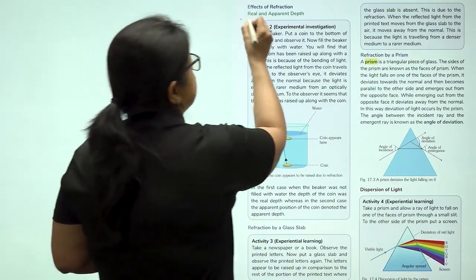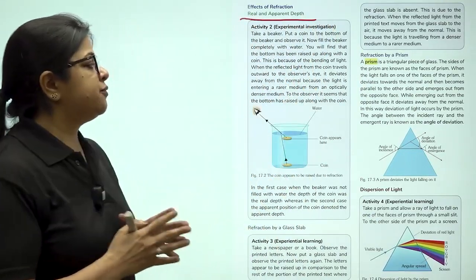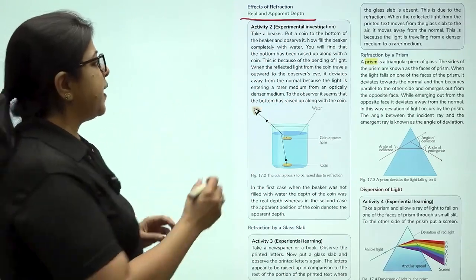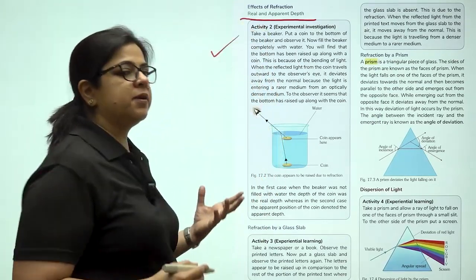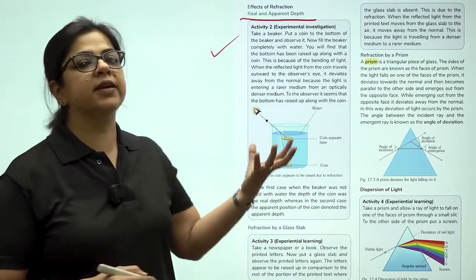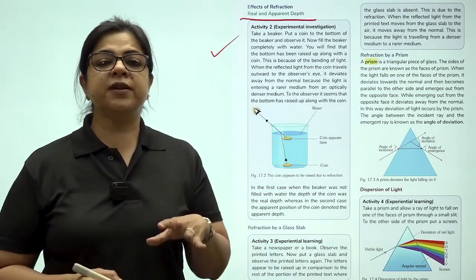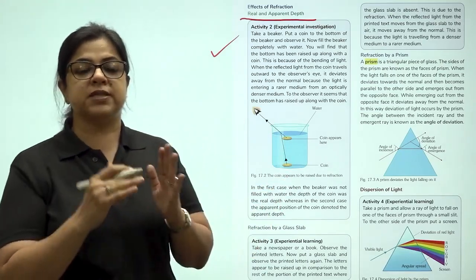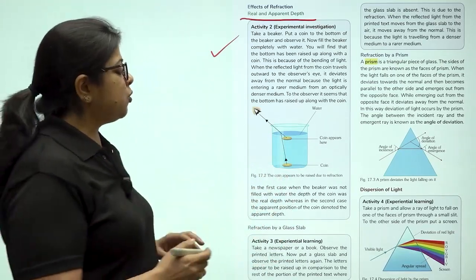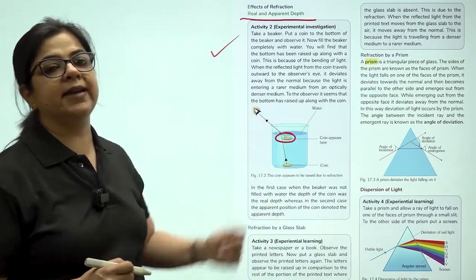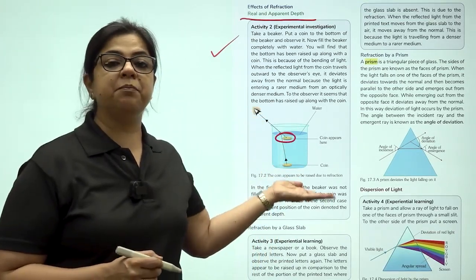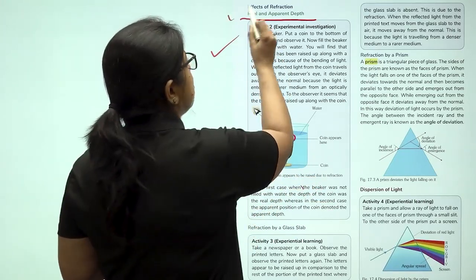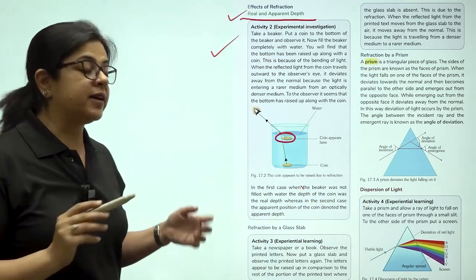The effect of refraction, the first example is real and apparent depth. This is a very interesting experiment that you can do at home also. If you don't have a beaker, you can take a glass container. Fill it with water and put a coin and look exactly from the top, not from the side, right from the top. You will feel as though the coin is slightly above the base of the container. Why is it so? This is because of the effect of refraction.